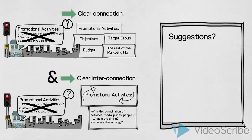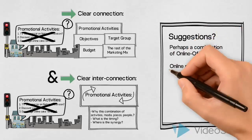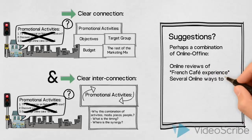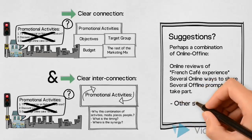One idea could be to encourage customers to review their French Cafe experience — not just the cakes. Depending on some research on the target group's media habits, a suitable online platform such as TripAdvisor or similar could be used. We could prompt the customers to take part when visiting the cafe, by personal contact and by different types of print. We might also encourage them to post their review on selected social media platforms, again depending on research of the target group's media habits. In this way we would combine online and offline promotion, interacting with the target group in various situations, places, and at various times — this increases the likely success of an integrated marketing campaign.